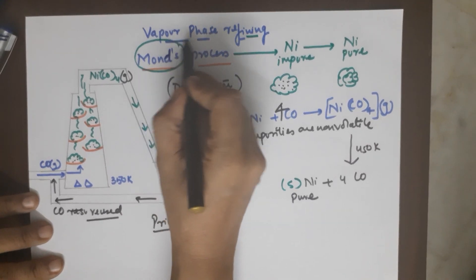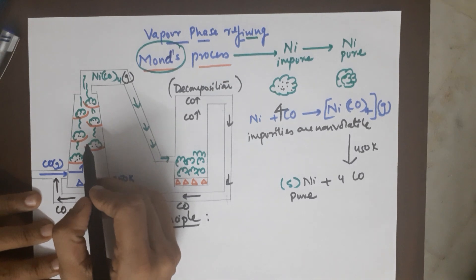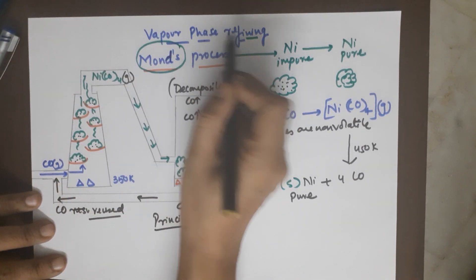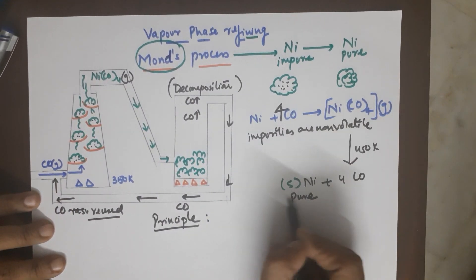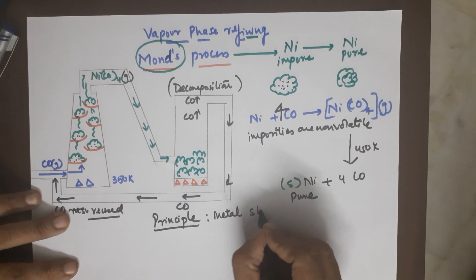So the principle behind this process, and we call it vapor phase refining, the reason is you are transforming your impure metal into a vaporized product which is then decomposed to give you the pure metal.